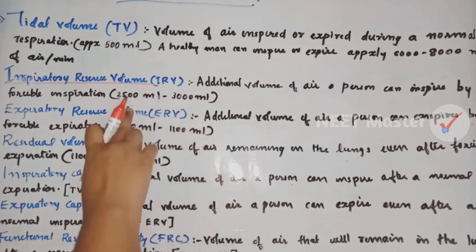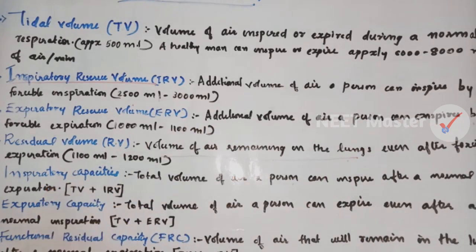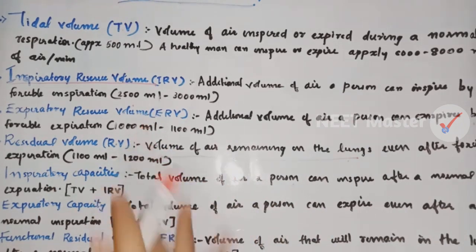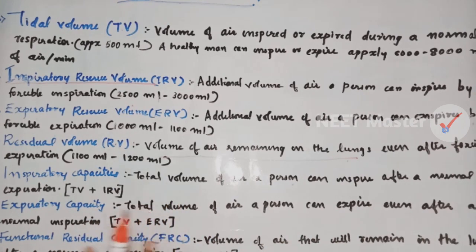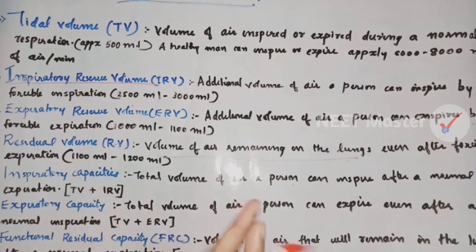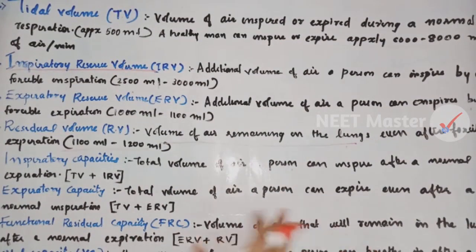The expiratory reserve volume is 1000 to 1100 ml of air. Residual volume, RV, is the volume of air remaining in the lungs even after a forcible expiration. The residual volume is approximately 1100 to 1200 ml of air.